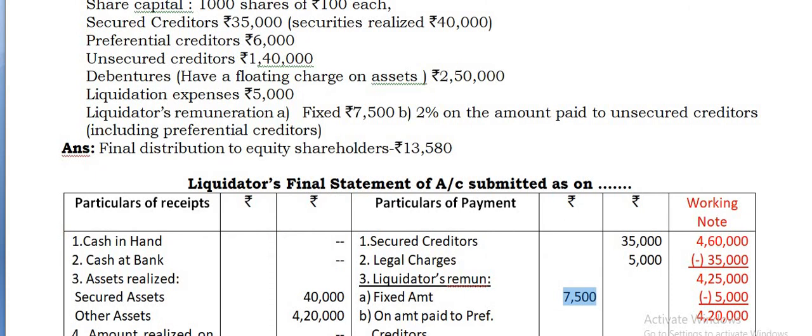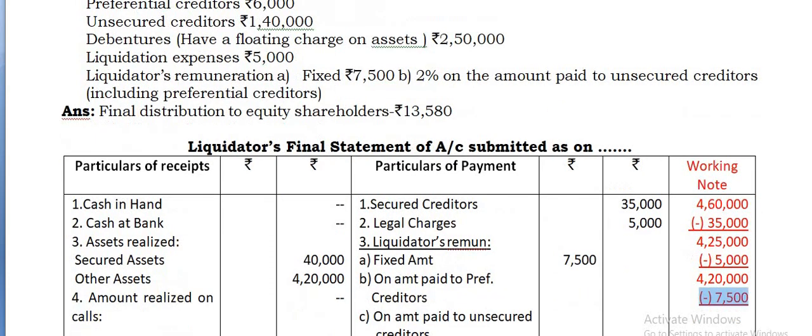Take that 7,500. Balance still you have 4,12,500.